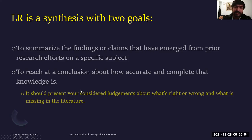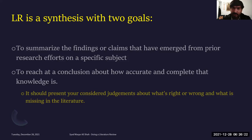The second goal is to reach a conclusion about how accurate and complete the knowledge is. To do that, you need a very critical insight into the body of knowledge — to know whether the knowledge produced is complete and accurately produced, or whether there are some problems. You look at it from a different perspective, or maybe some other people have different positions. It should present your considered judgments about what is right or wrong and what is missing in the literature. These are the two ultimate goals of literature review.